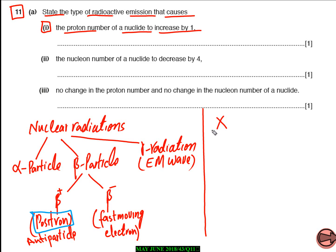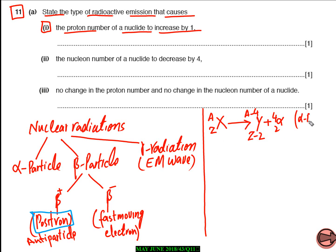Now let's understand alpha decay. If we have a nucleus X with atomic number Z and mass number A, and it undergoes alpha decay, a new nucleus Y is formed and an alpha particle is emitted. The atomic number decreases by 2 and the mass number decreases by 4.